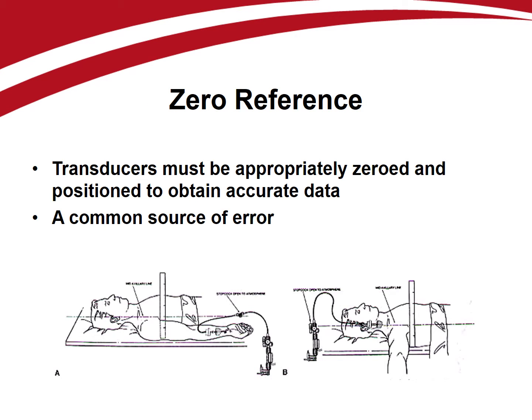Pressure transducers must be zeroed against ambient atmospheric pressure and appropriately positioned relative to the patient's heart to obtain accurate hemodynamic data. Transducers are typically zeroed at the level of the heart, or phlebostatic axis. Appropriately zeroing a patient's pressure monitoring system is the single most important step in obtaining accurate and meaningful data, and is also one of the first steps to perform when troubleshooting potentially erroneous data.